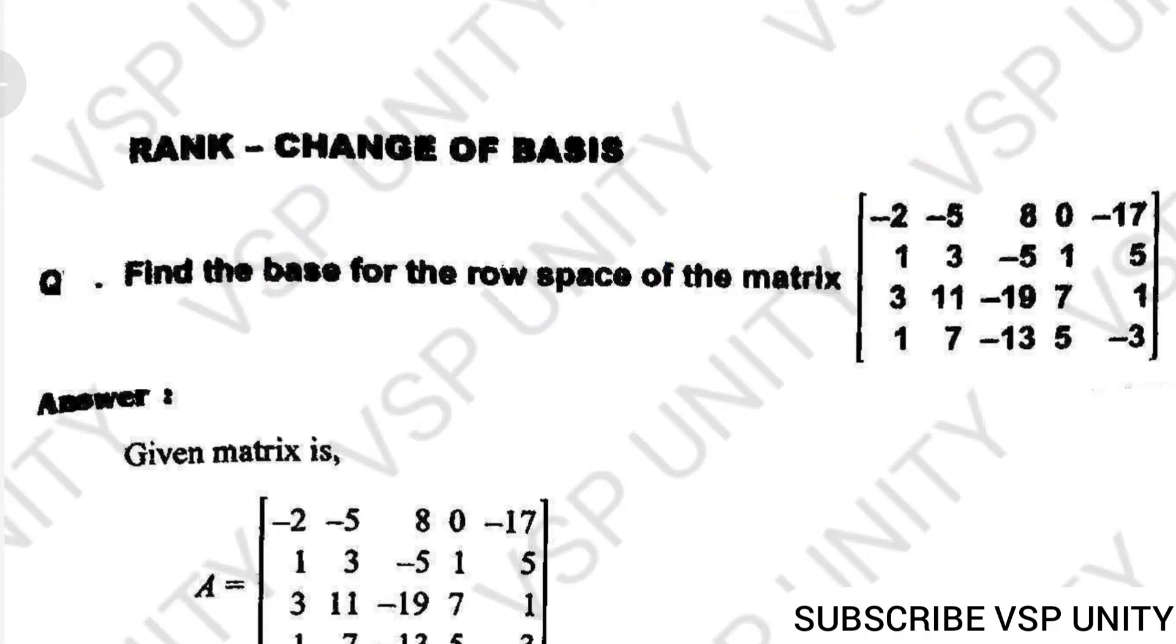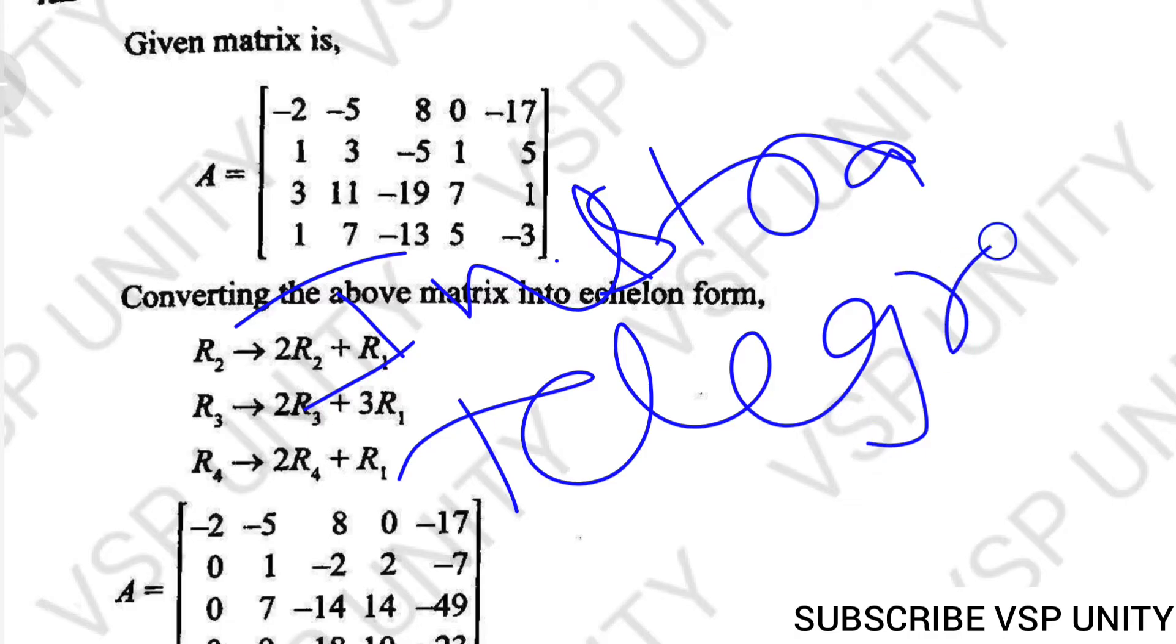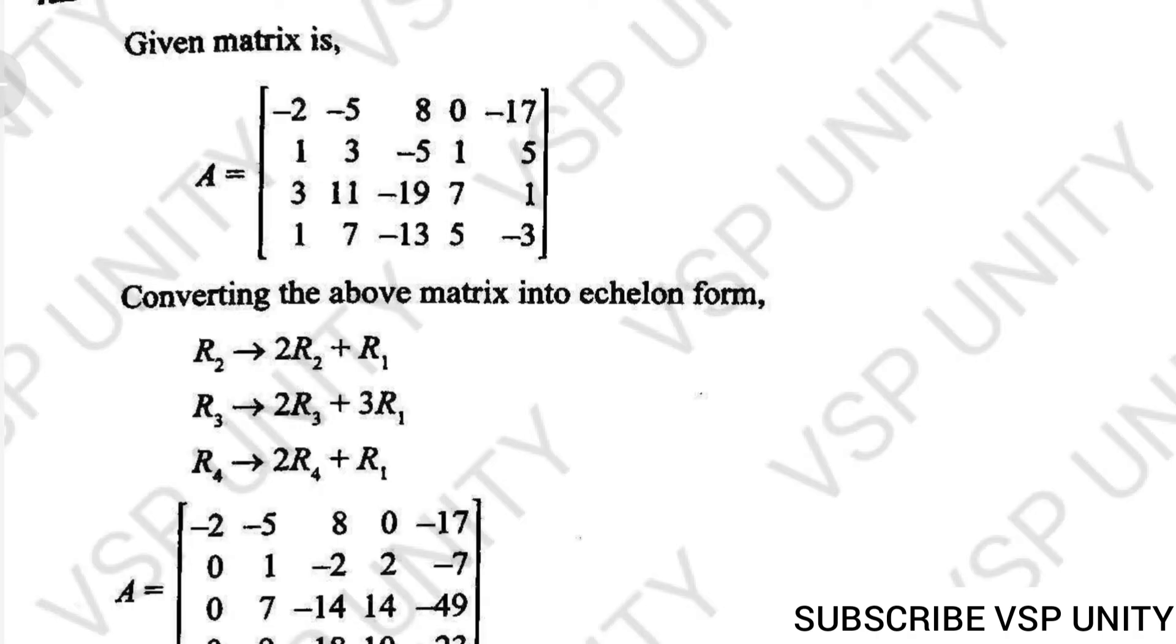First of all, I have taken the given matrix as A. Converting the above matrix into echelon form. If you want to find row space or column space or null space anything, first of all you need to convert the given matrix into echelon form. I already explained this basic concept in a previous class.